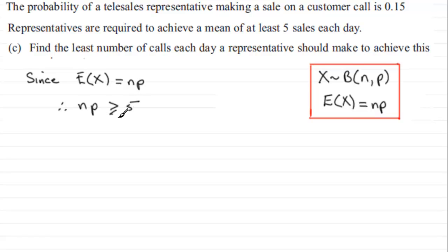So that means that we can rearrange this for n: n has got to be greater than or equal to 5 divided by p. We don't have to swap this inequality around because p is a positive number—remember, if you divide by a negative number in an inequality you have to change the sign.